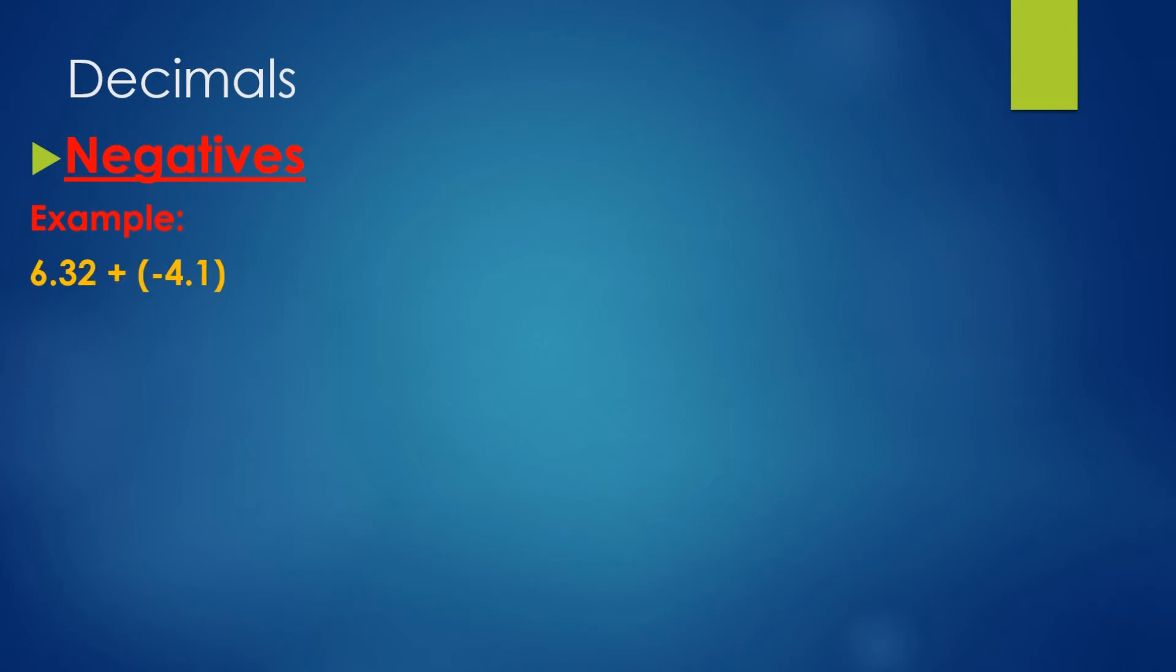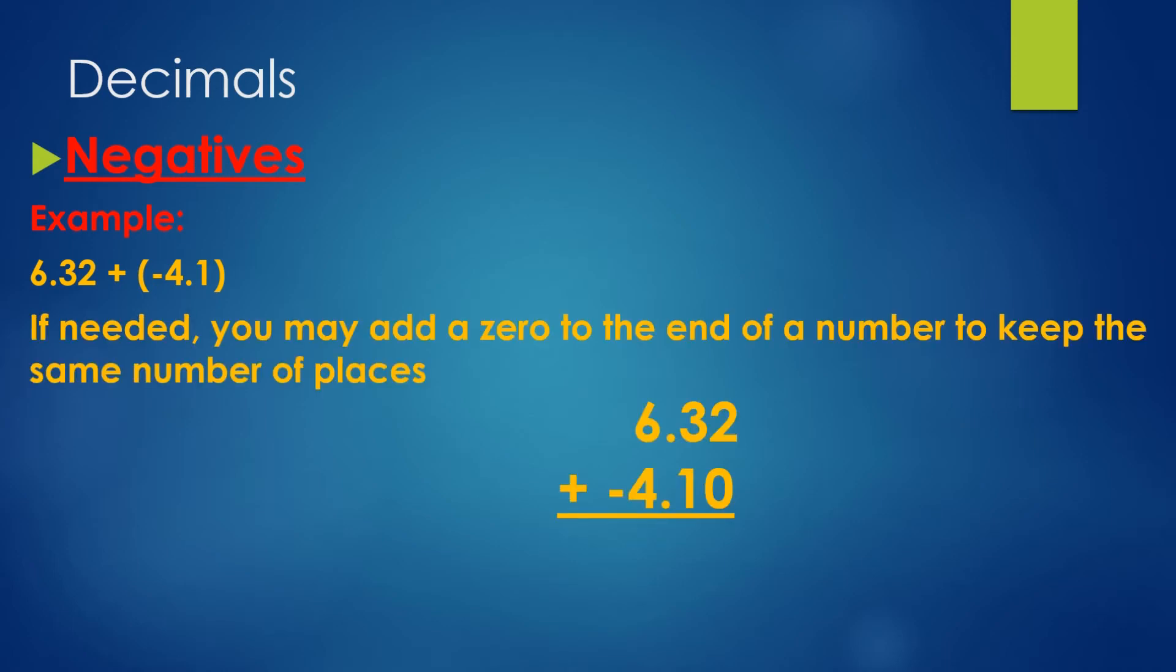Now we have to deal with negatives. For example, 6.32 plus negative 4.1. So we place them on top of each other, and you can also add a zero to the end of the number to make them have the same number of decimal places. So we subtract as normal. What's two minus zero? Two. Remember that three plus a negative number of one is the same thing as three minus one. So what's three minus one? Two, exactly. And then six plus negative four is the same thing as six minus four, which would give us two. So our answer is 2.22, exactly.